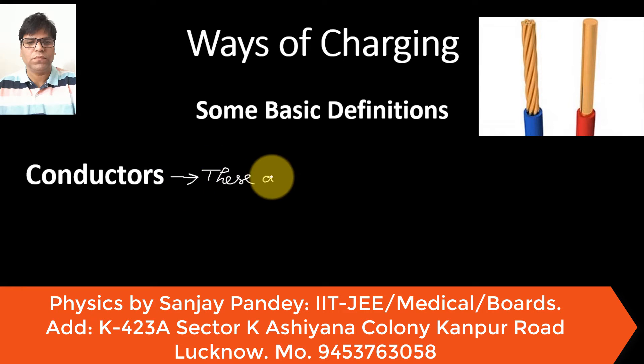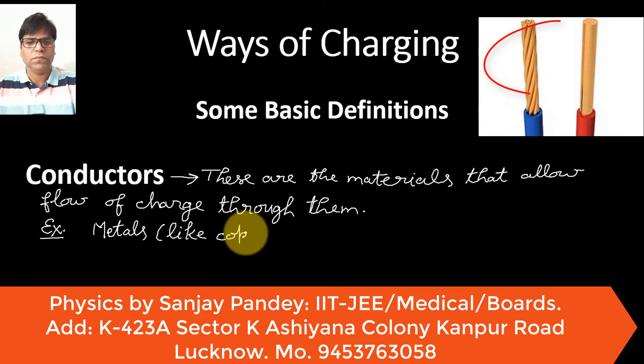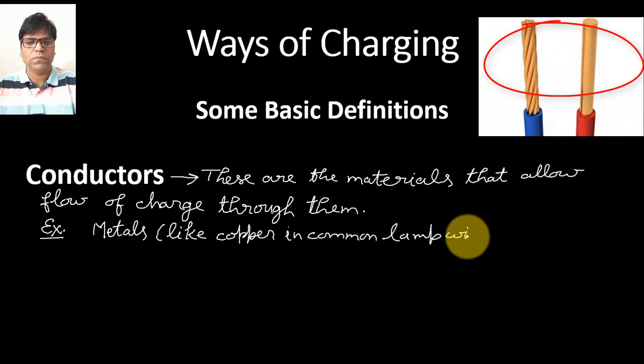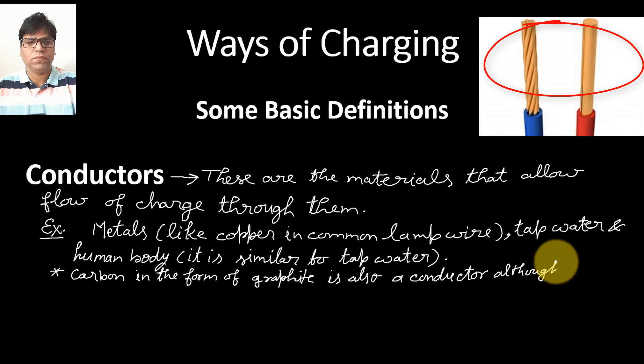These are the materials that allow flow of charge through them. Examples include metals such as copper in common lamp wire, tap water and human body. Human body is similar to tap water. Here it is important to note that carbon in form of graphite is also a conductor, although it is a non-metal.